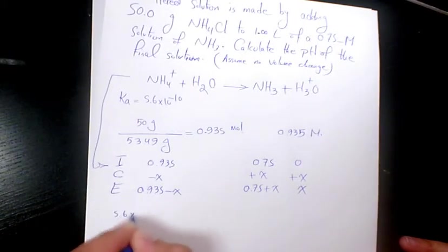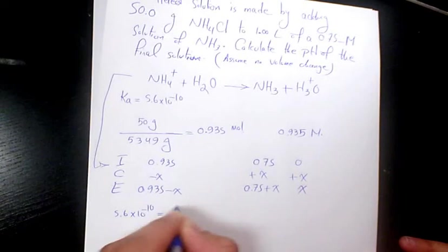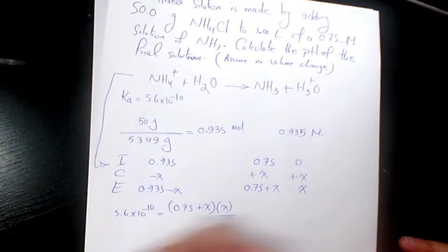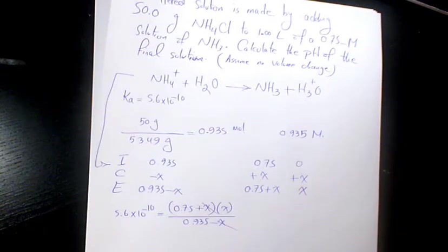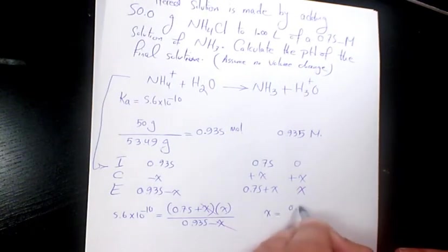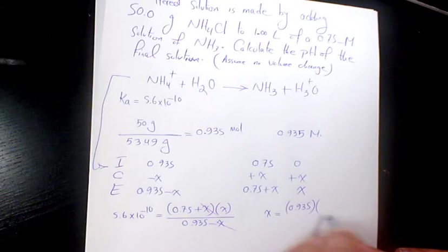5.6 times 10 to the power of negative 10 equals (0.75 plus x) times x divided by (0.935 minus x). Simplifying, x equals 0.935 times 5.6 times 10 to the power of negative 10.